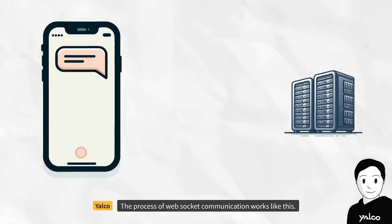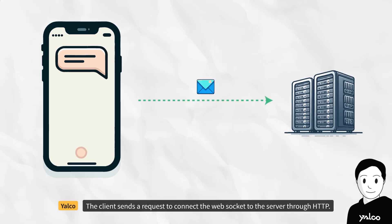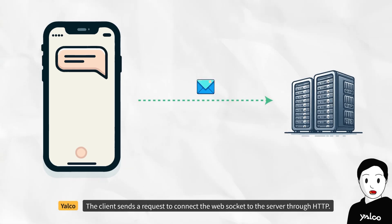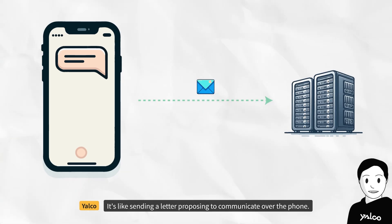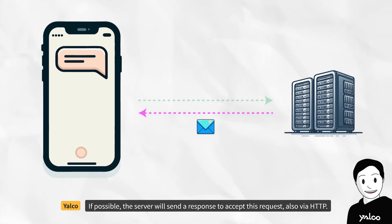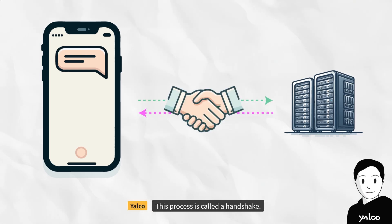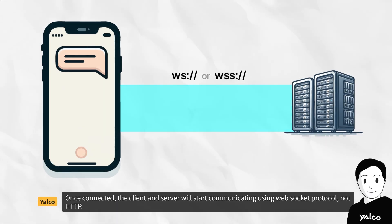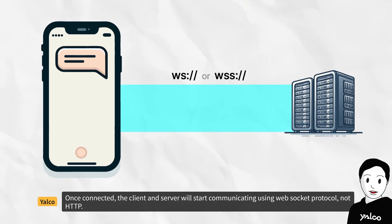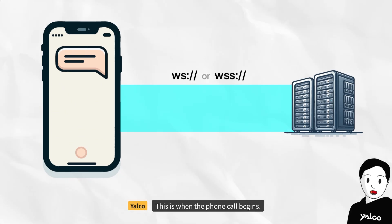The process of WebSocket communication works like this. The client sends a request to connect the WebSocket to the server through HTTP — it's like sending a letter proposing to communicate over the phone. If possible, the server will send a response to accept this request, also via HTTP. This process is called a handshake. Once connected, the client and server will start communicating using WebSocket protocol, not HTTP. This is when the phone call begins.